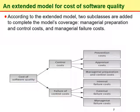The next model is called the extended model of cost of software quality. This model extends the classic model to include management's contributions to the total cost of software quality. According to the extended model, two subclasses are added: managerial preparation and control costs, which is a subcategory of control costs, and managerial failure costs, which is a subcategory of failure of control costs.